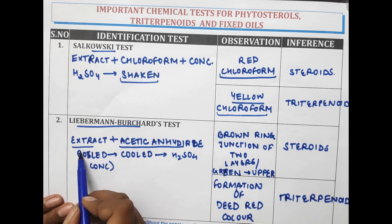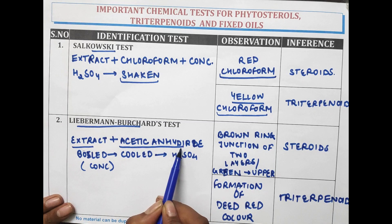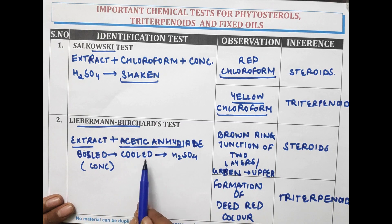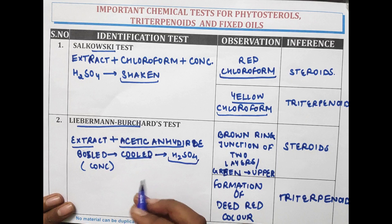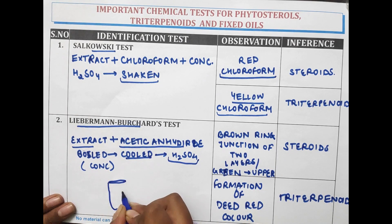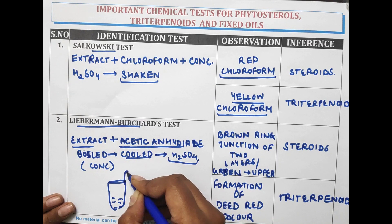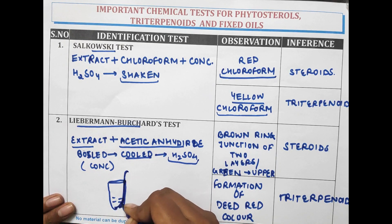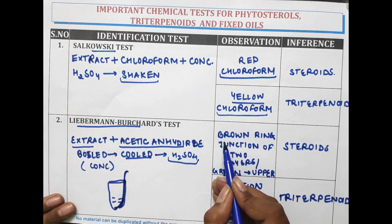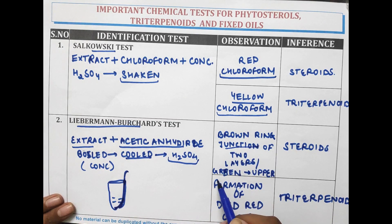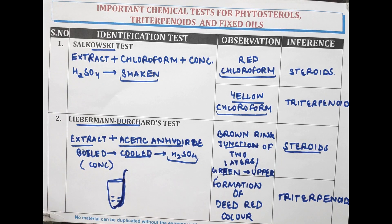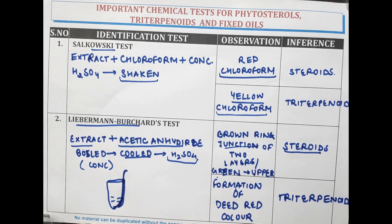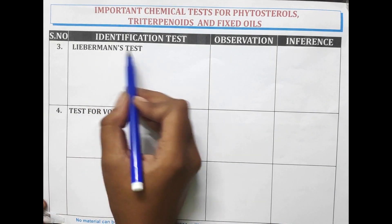In the Lieberman-Burchard test, the extract is treated with acetic anhydride, then boiled in water. After cooling of the solution, concentrated sulphuric acid is added drop by drop from the side of the test tube. A brown coloured ring formed at the junction of two layers and green colour at the upper layer indicates presence of steroids, whereas formation of deep red colour indicates presence of triterpenoids.